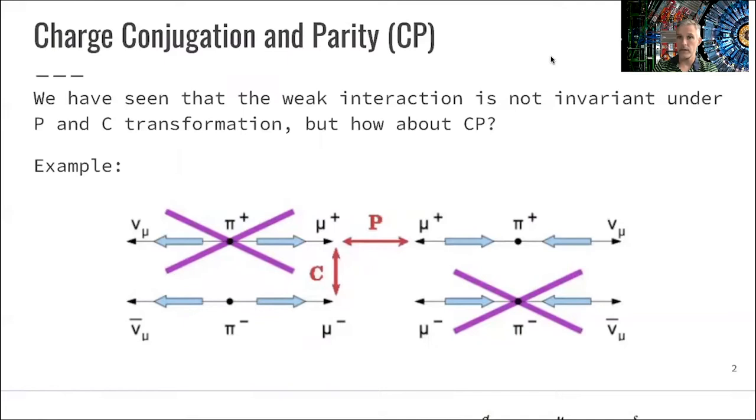The classical example to show parity violation is the decay of a pion. We have this charged pion with spin 0 that decays into a muon and a neutrino, an antimuon and a neutrino. Since the neutrino is left-handed, the out-of-the-decay coming antimuon needs to be left-handed as well.